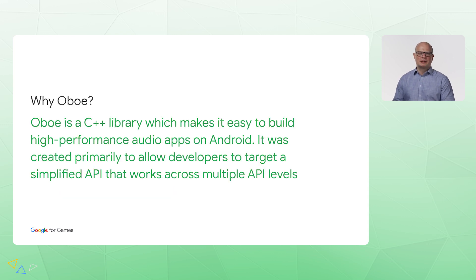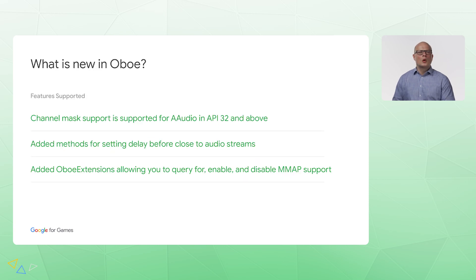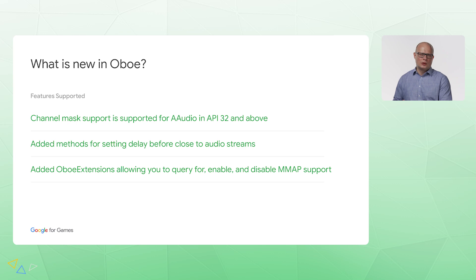Oboe is a C++ library which makes it easy to build high-performance audio apps on Android. It was created primarily to allow developers to target a simplified API that works across multiple API levels. What is new in Oboe? Channel mask support is available for AAudio in API 32 and above, added methods for setting delay before close to audio streams, and added Oboe extensions allowing you to query for, enable, and disable MMAP support.